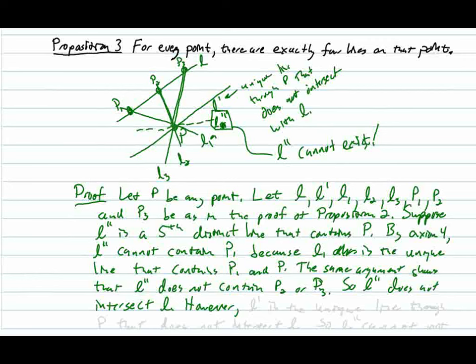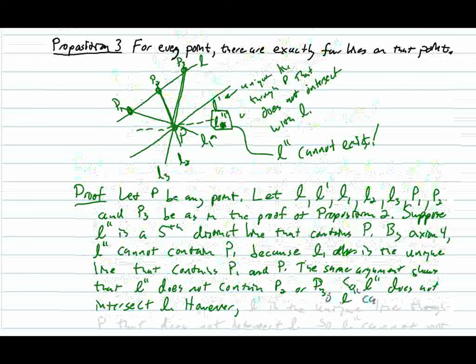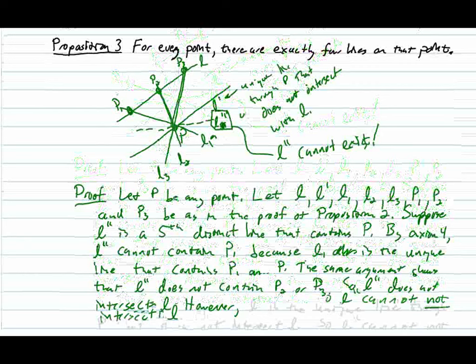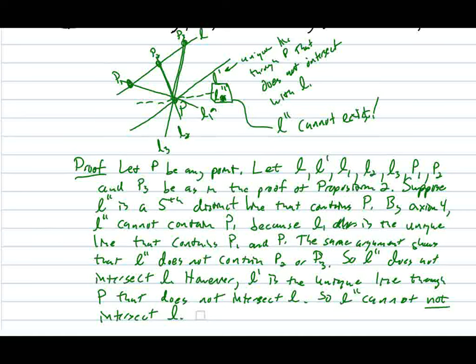So L double prime is the unique line through P that does not intersect L. But L double prime cannot intersect L because there are already lines through P that contain P1, P2, and P3, and it cannot not intersect L because L prime is the unique line guaranteed by Axiom 5 that contains P and does not intersect L. This gives us our contradiction, completing the proof.